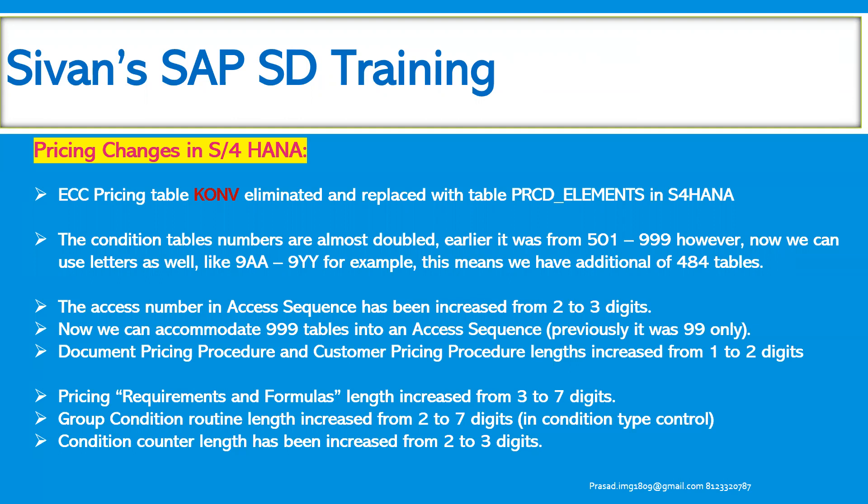The condition table numbers are almost doubled in S4 HANA compared to ECC. In ECC it was about 501 to 999, or 01 to 919 for new implementations. However, now we can use letters as well, like 9WA to 9YY — an additional 484 tables. Any client wanting to create a new condition table can utilize from this expanded list of available condition tables.